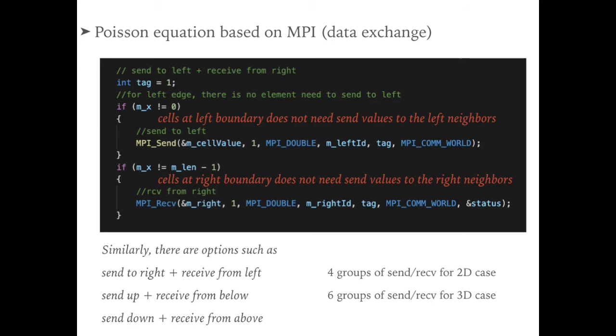Therefore, in the complete program, we also need to provide the options such as send to right and receive from left, send up and receive from below, send down and receive from above. Therefore, we have four groups for send-receive pairs for two-dimension case, and six groups for send-receive pairs for three-dimension case. Please refer to the link below this video to check the source code.